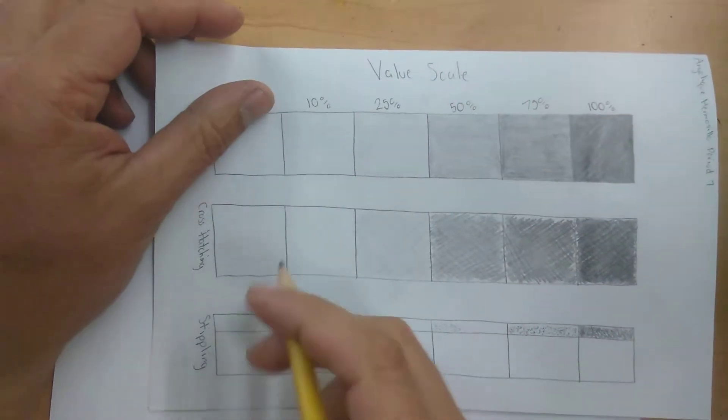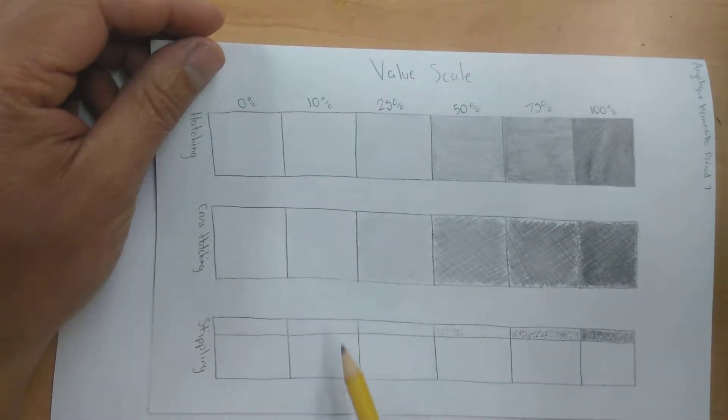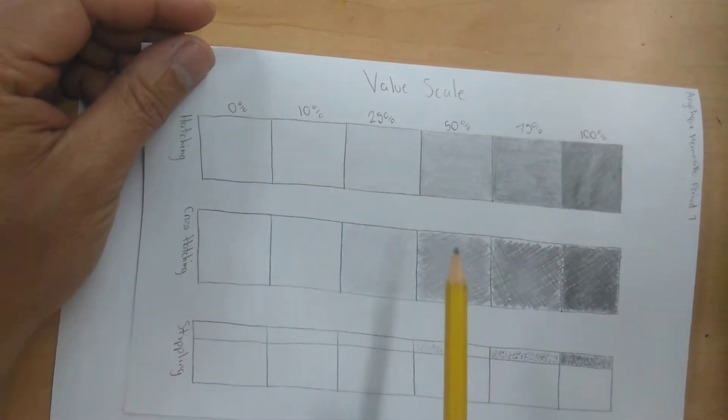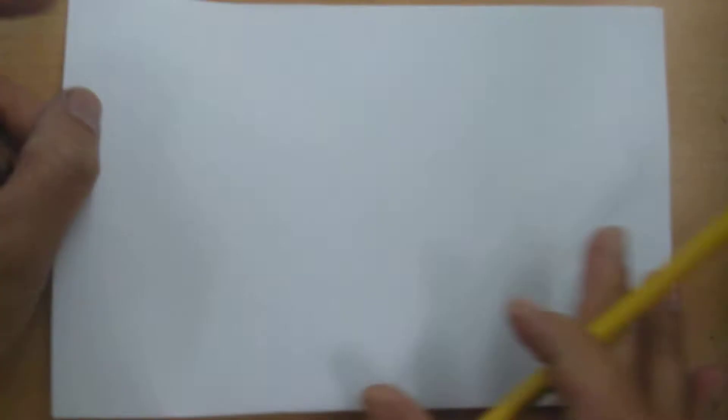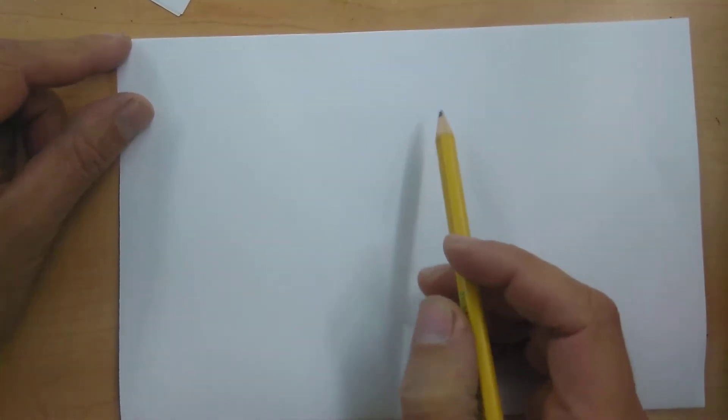Time to talk about value and shading. What we're going to do is we're going to make some value scales today. And to help you do that, first of all, what you're going to do is take your sheet of paper, fold it in half, and we're going to work on this top half to make our value scales.